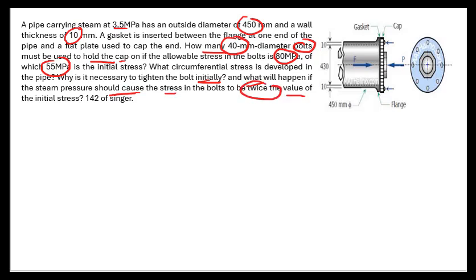Also, what will happen if the steam pressure causes the stress in the bolts to be twice the value of the initial stress? This problem is from Singer 142. Let's do the solution. The diameter is 450 millimeter, so the thickness is 450 minus 10 minus 10, which gives us 430 millimeter.